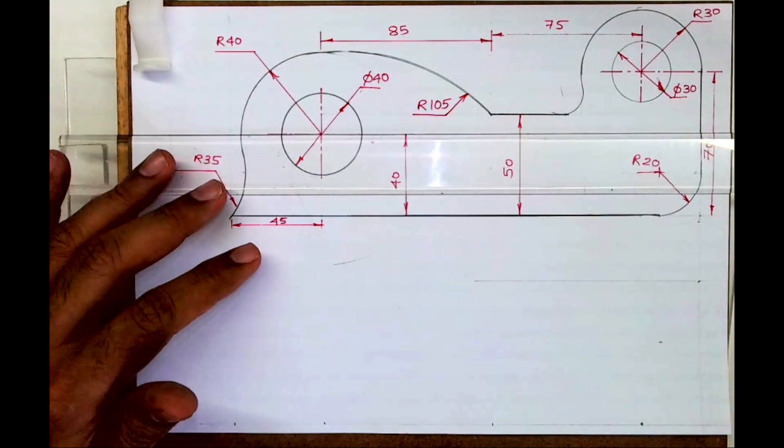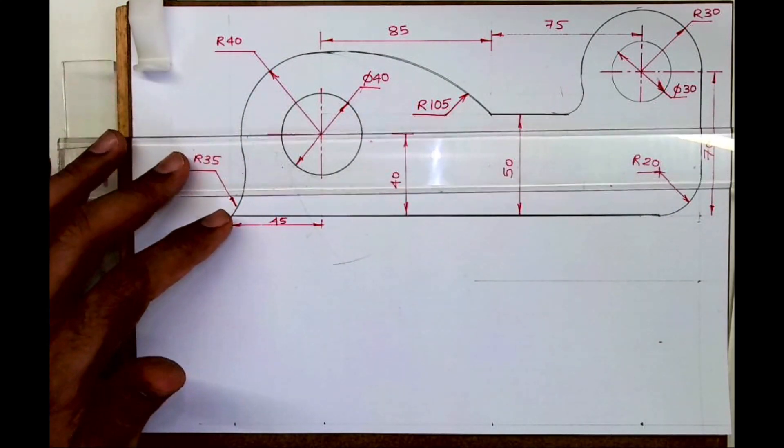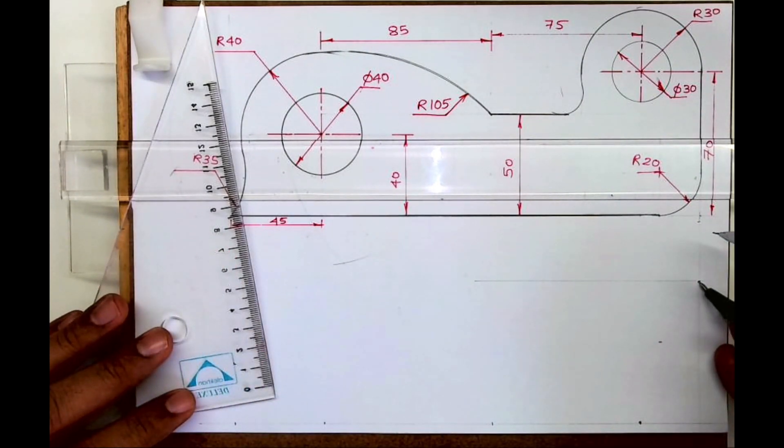This is 70 plus 30 equals 100, so from here I'll go up by 30, 70, and 30. From here I will draw horizontal line. Now if you see it is 30, so I can take radius 30.